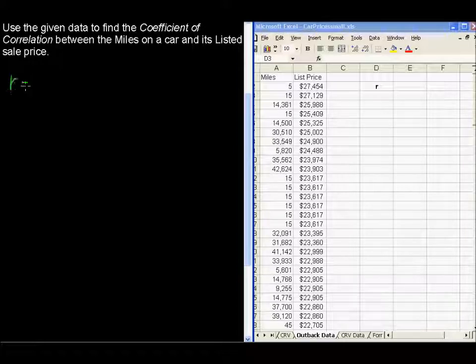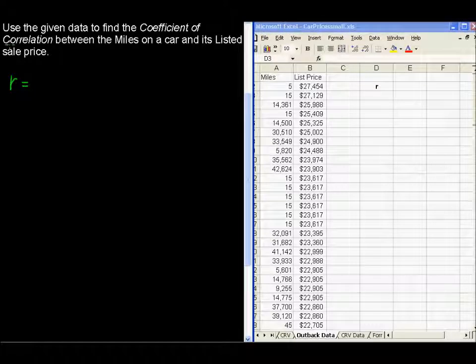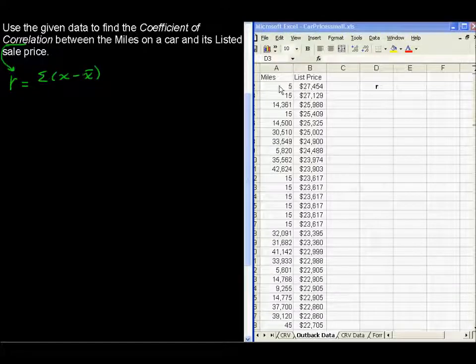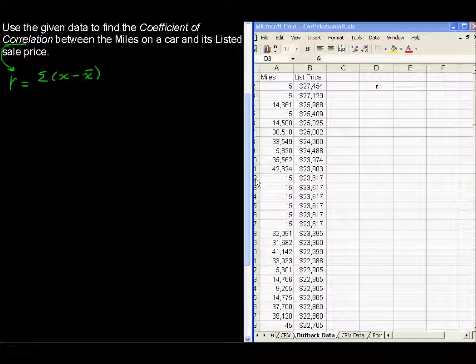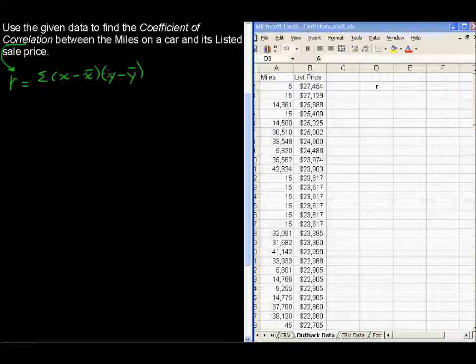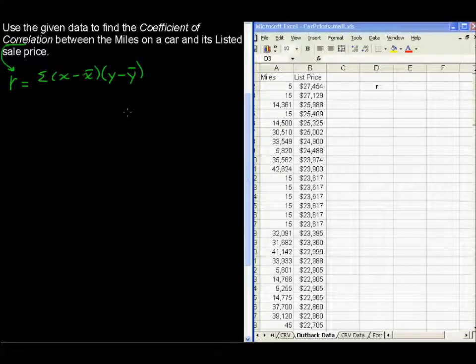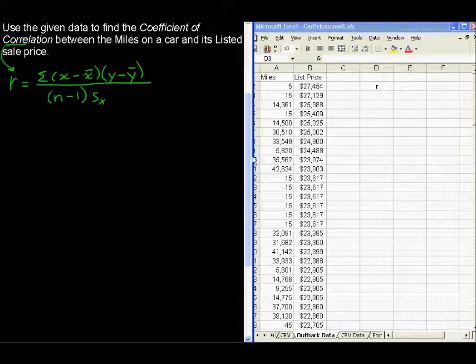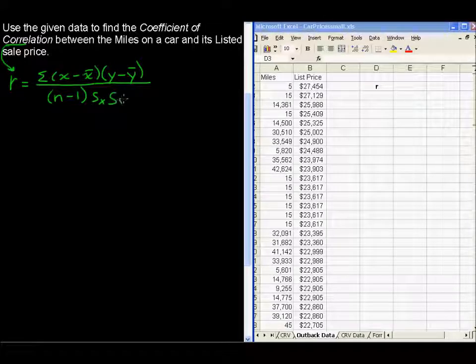Just to show real quickly, if we were going to do this by hand, that coefficient of correlation r, that's what the coefficient of correlation is denoted with the lowercase r, it's the sum of all of the differences, so X minus X bar, that's every one of these X values minus the mean of this column, multiplied by all of the differences of Y, Y minus the mean of this Y column. So the product of those two, and then summed for all of those, all divided by the sample size minus 1, that's n minus 1, times the standard deviation for the X column, multiplied by the standard deviation for the Y column.